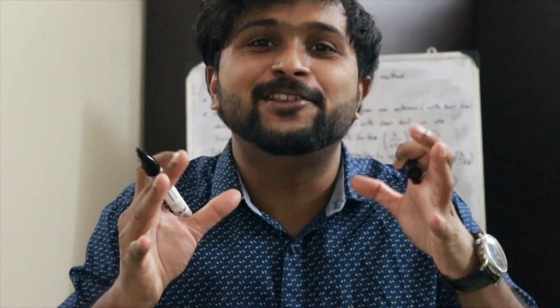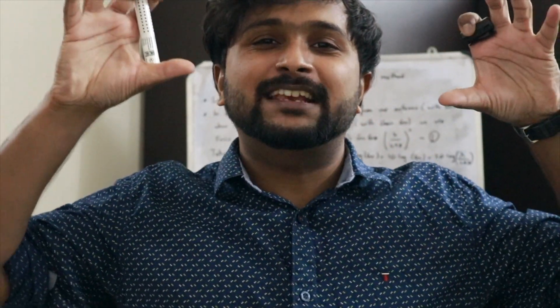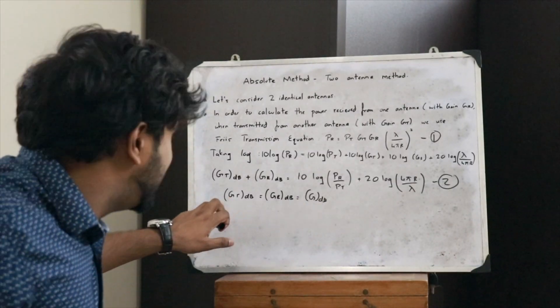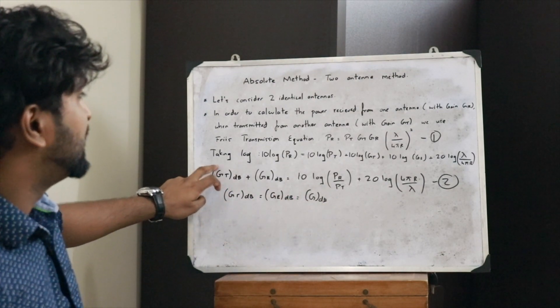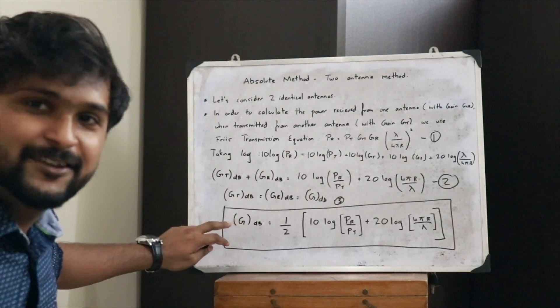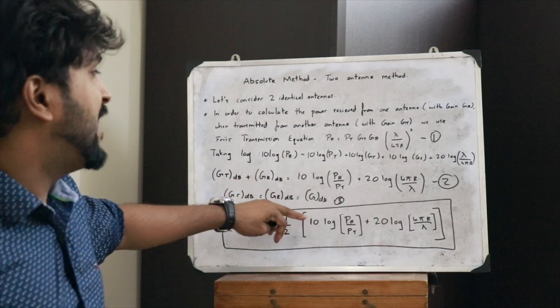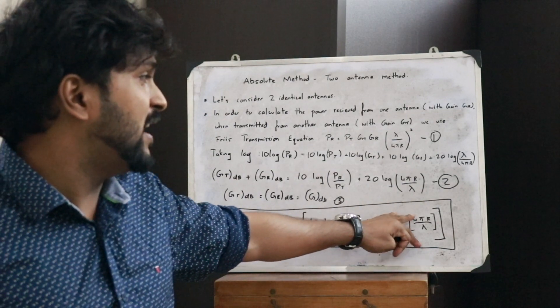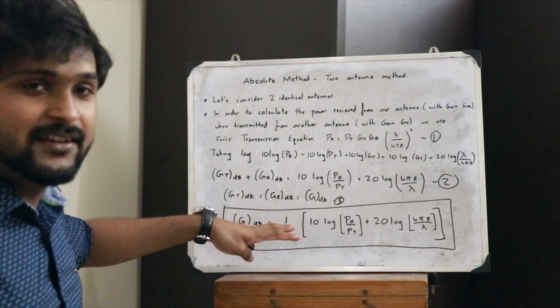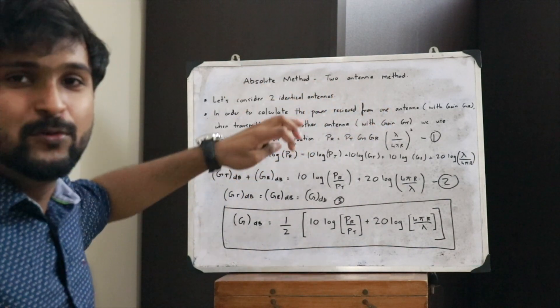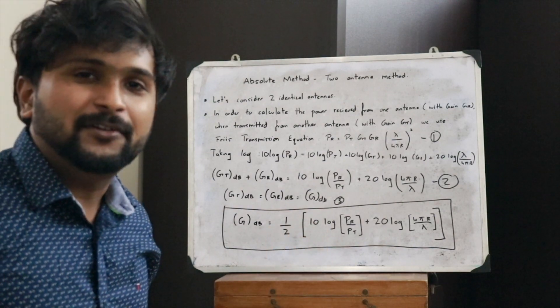Since we have considered both antennas to be identical, both will have the same value of gain. Therefore Gt(dB) = Gr(dB) = G(dB). Rearranging, we get: G(dB) = ½ × [10 log(Pr/Pt) + 20 log(4πr/λ)]. This is how we find the gain of a particular antenna using the two-antenna method under the absolute method.